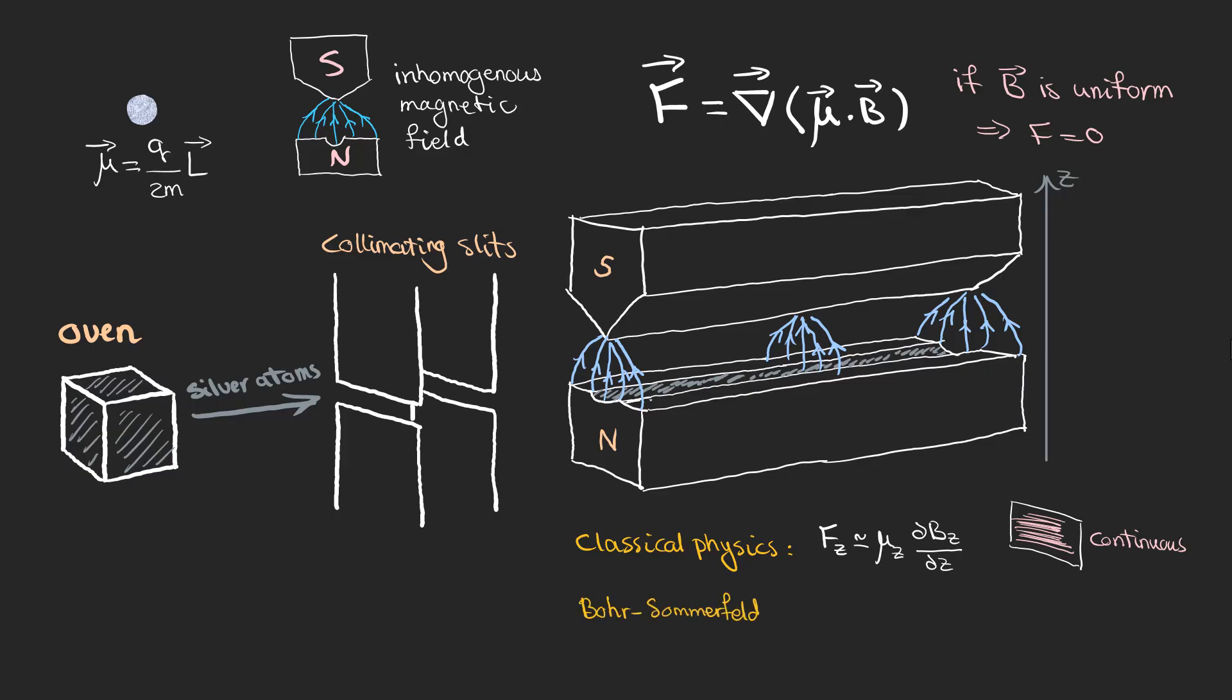On the other hand, if the Bohr-Sommerfeld model was correct and considering that the 5s orbital has 0 orbital angular momentum L=0, Stern and Gerlach would have expected to see no deflection of the silver atoms. So, they would have expected to see a single undeflected beam of silver atoms hitting the glass plate as there would be no force acting on the atoms to cause deflection.